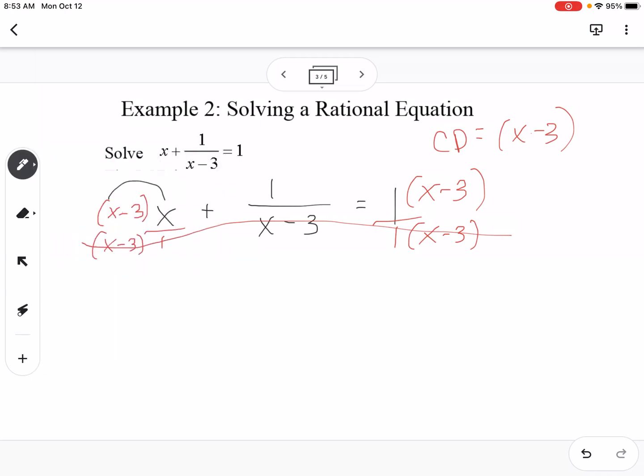So now I'm going to distribute the x here, so that gives me x squared minus 3x plus 1 equals x minus 3. Now I'm going to get everything onto the same side since it's a quadratic, so this would be x squared. If I subtract the x over here, it's going to be minus 4x. And then if I add 3, it's going to be plus 4.